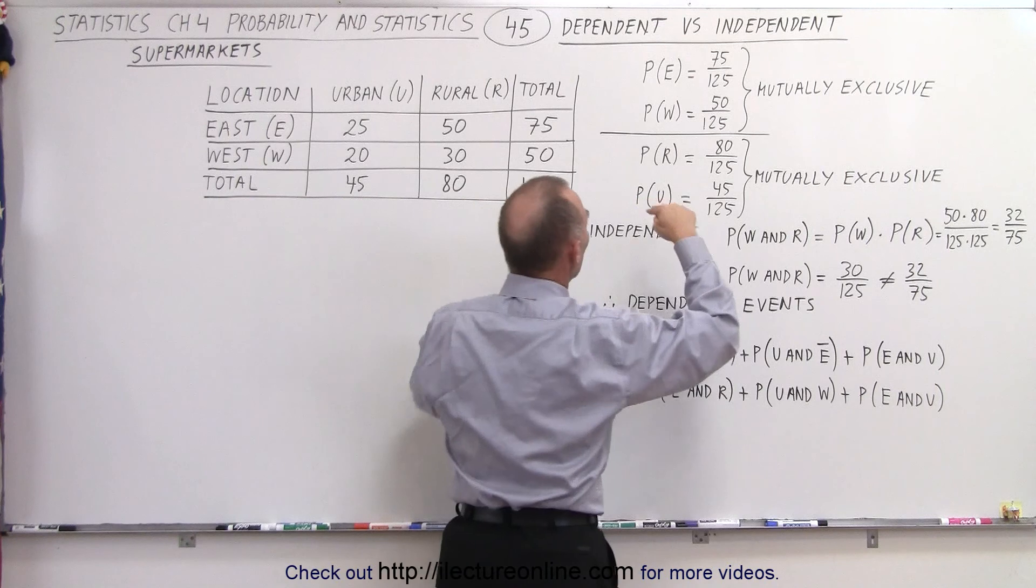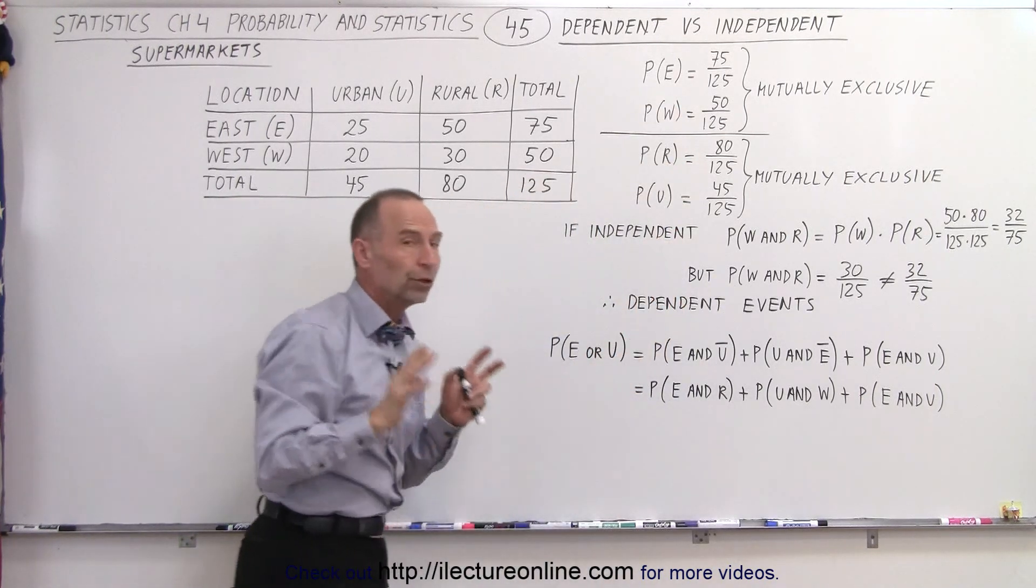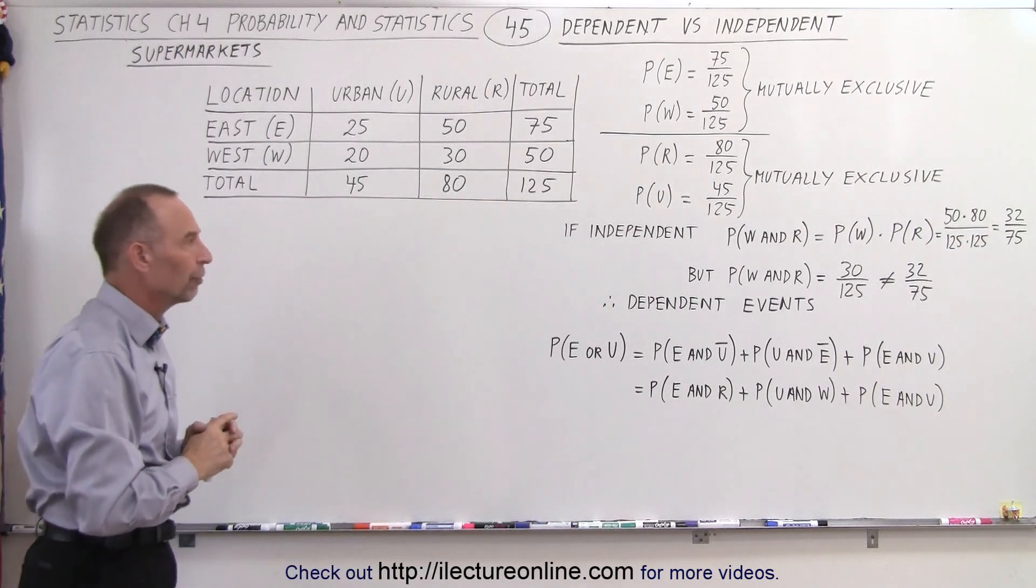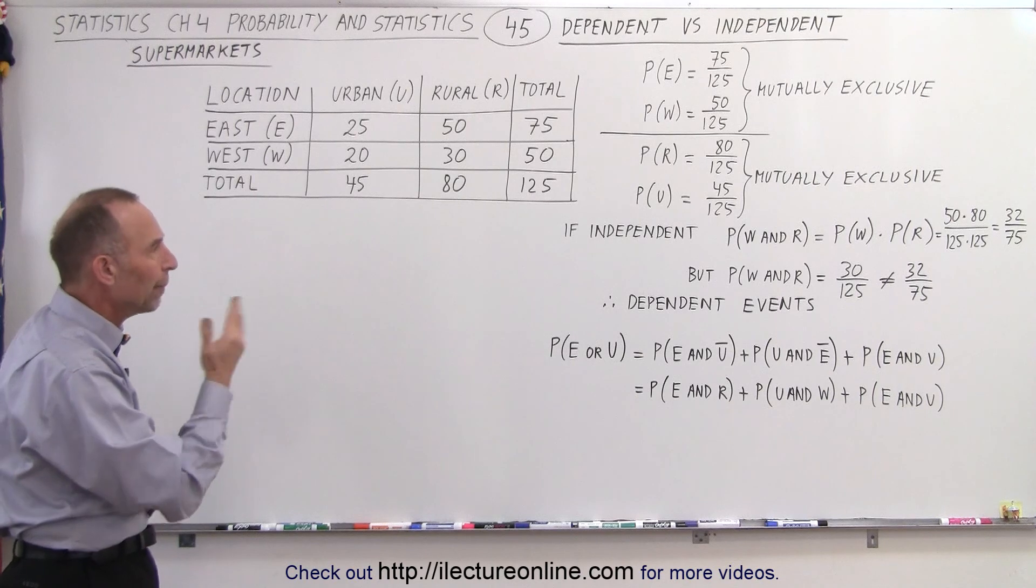But if we start crossing them over, for example in the west and rural or east and urban together, those are not mutually exclusive events. But here we're trying to determine if they're independent or dependent events.